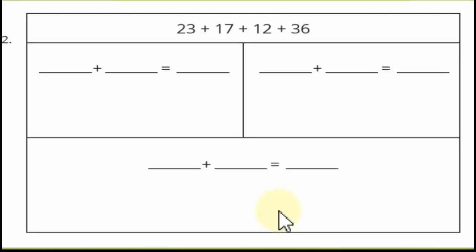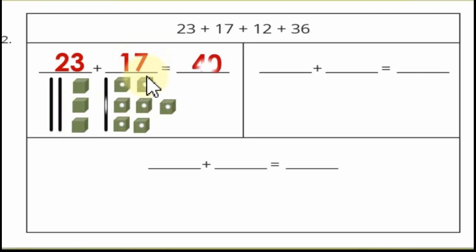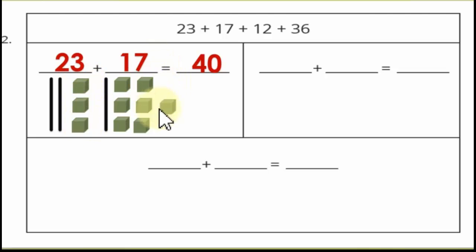Now another example: 23 plus 17. Express 23 as 2 sticks (2 in tens place) and 3 cubes (3 ones). Express 17 as 1 stick and 7 cubes (7 ones). 3 ones plus 7 ones equals 10. That gives us 1 ten. 1 ten added to 2 tens and 1 ten equals 4 tens. So the sum of 23 and 17 is 40.